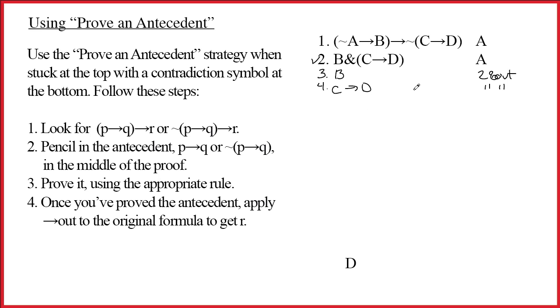There is nothing else that we could do at the top at this point. Can't do arrow out on line 1 or 4, so we're stuck at the top. Time to go to the bottom. Single capital letter. When you have a single capital letter, we know that we're doing tilde out. So let's make a big box here that occupies the entire available space. Top of the box will be the opposite, so that's tilde D. It's line 5, and it's a provisional assumption for the rule tilde out.